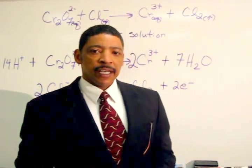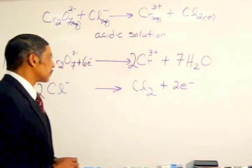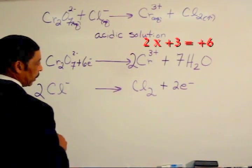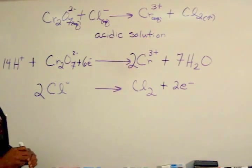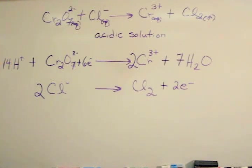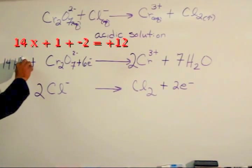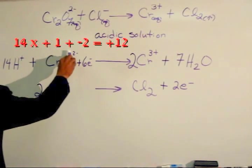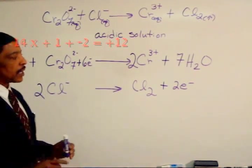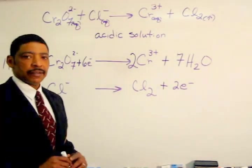The charges may now be balanced by adding electrons to the appropriate side of each half reaction. In the first half reaction, the charge on the right side is plus six, where two times plus three is plus six. The charge on the left side is plus 14, where 14 times plus one is plus 14, plus a minus two equals plus 12. To balance the charge in the first half reaction, I will add six electrons to the left side.